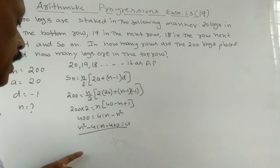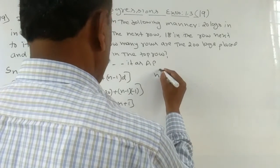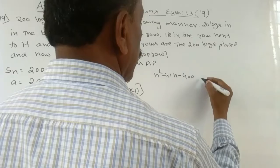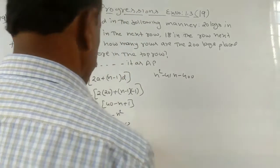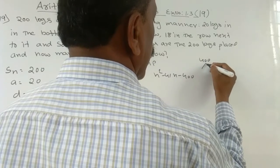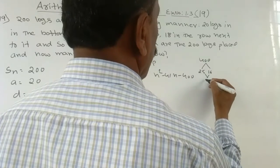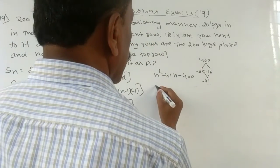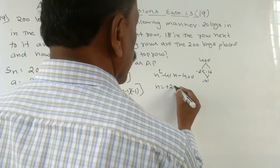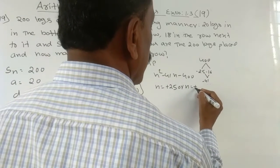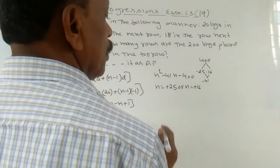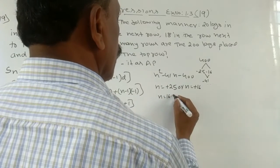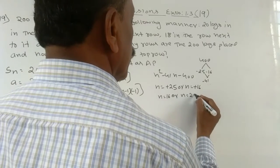This is a quadratic equation: n² − 41n + 400 = 0. Factoring gives (n − 25)(n − 16) = 0, so n is equal to 25 or n is equal to 16. We take n equal to 25 or n equal to 16 as potential solutions for the number of rows.